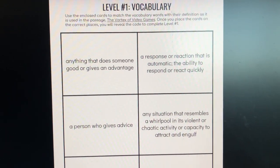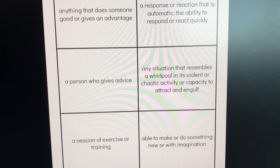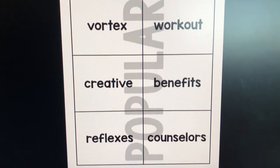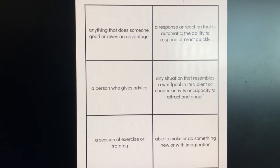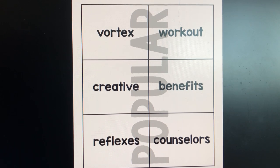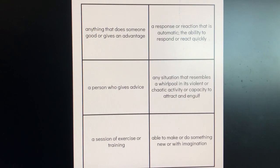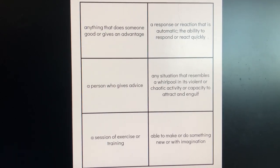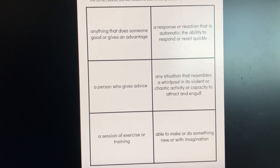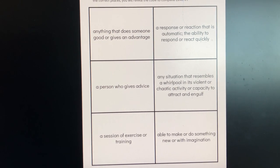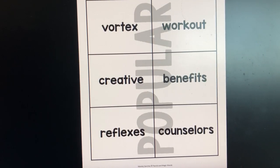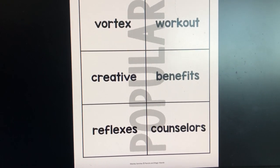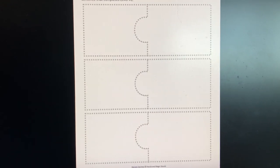The first activity is vocabulary matching. Students have a sheet with all the definitions and cut-out words to place on top of the correct definitions. Teachable moment — I just realized I didn't put the definitions in the same order as the words, so students could see the code word "popular" too easily. That's a quick fix — just one sheet to reprint six times and replace in the envelope. Once they correctly match the words to definitions, they'll see the code word "popular" to move on to the next level.